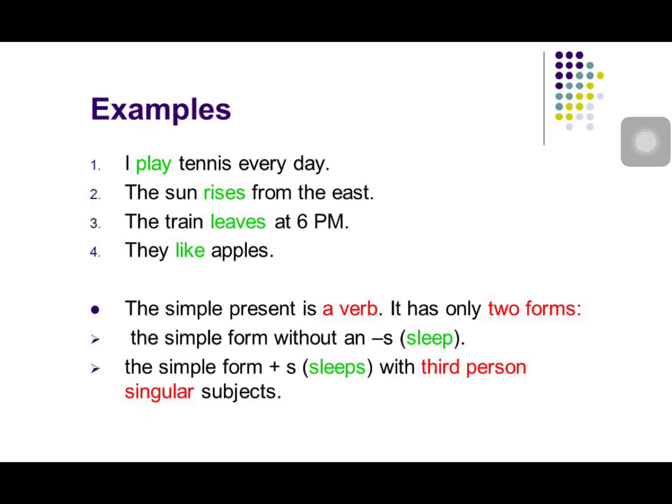The simple present tense verb has only two forms: the simple form without S, and the simple form plus S with a third person singular subject. It means if the subject is singular or third person, then we use S or ES with the verb.